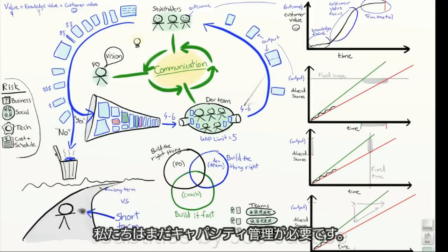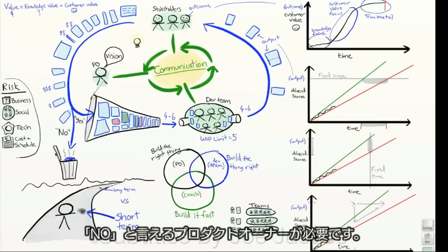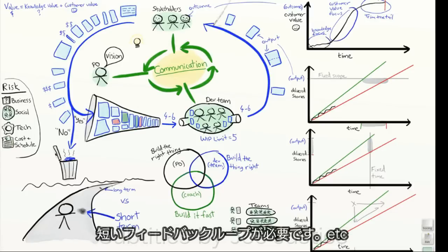We still need capacity management. We still need stakeholder communication. We still need product owners who can say no. We still need backlog grooming. We still need a short feedback loop.